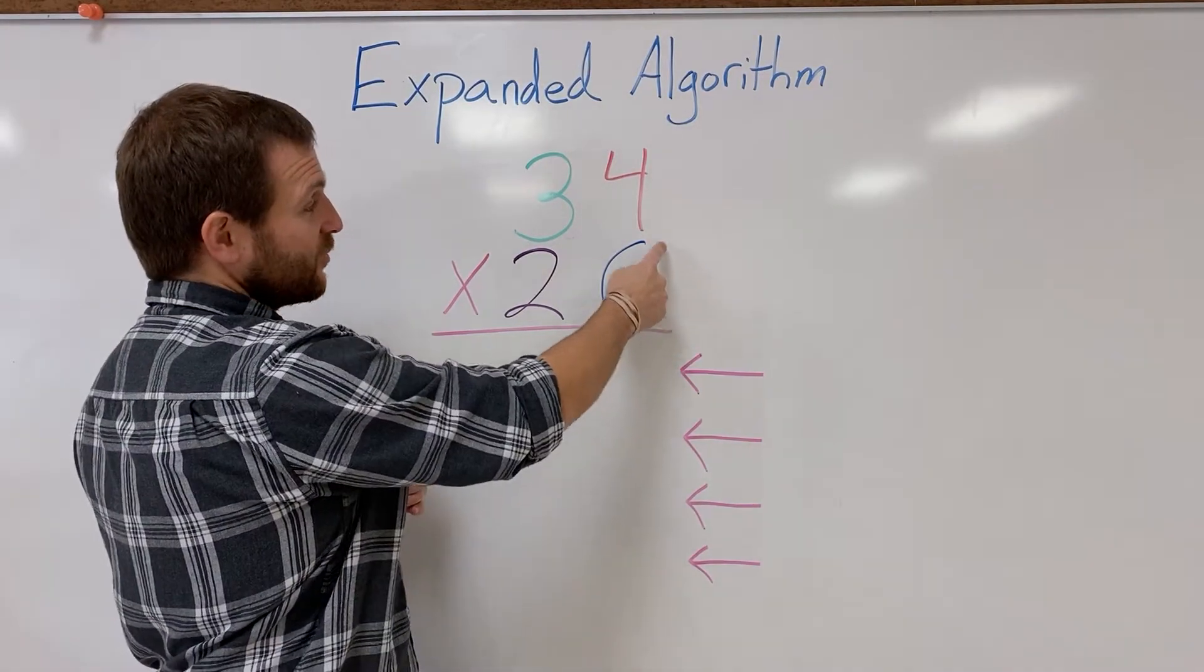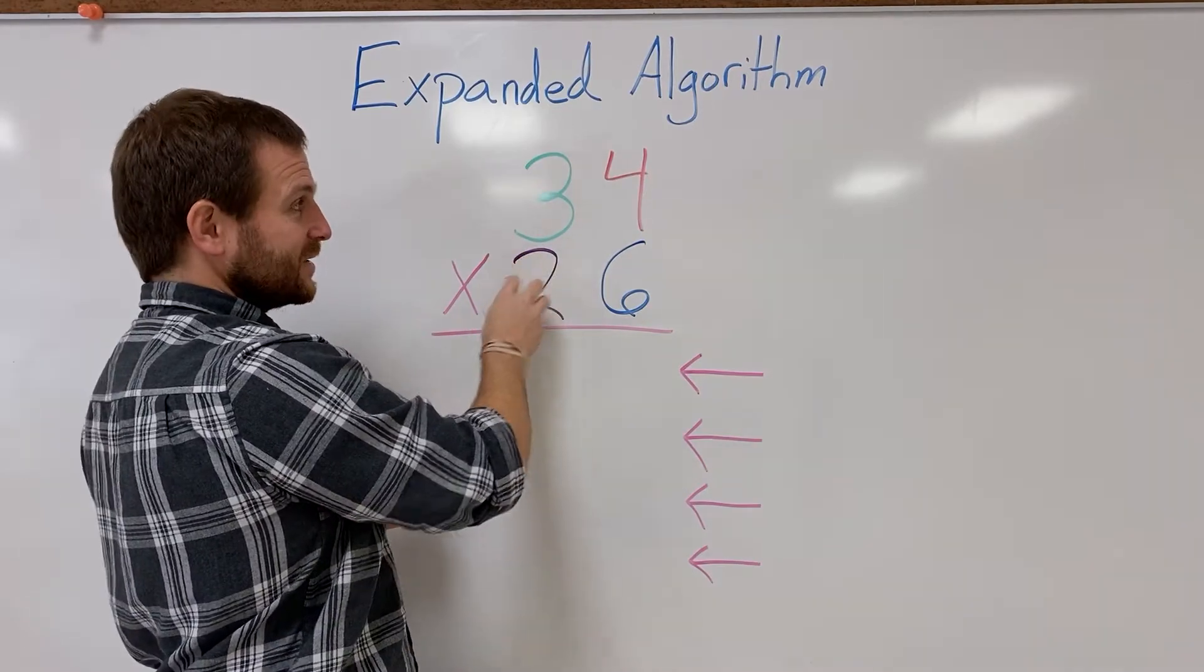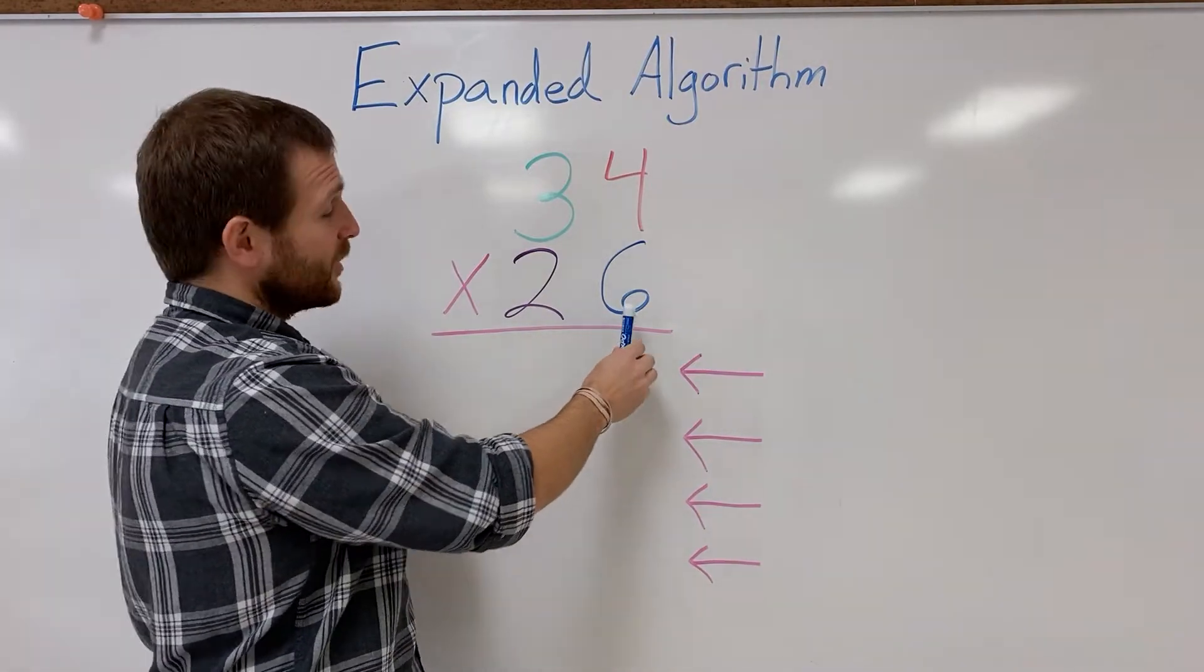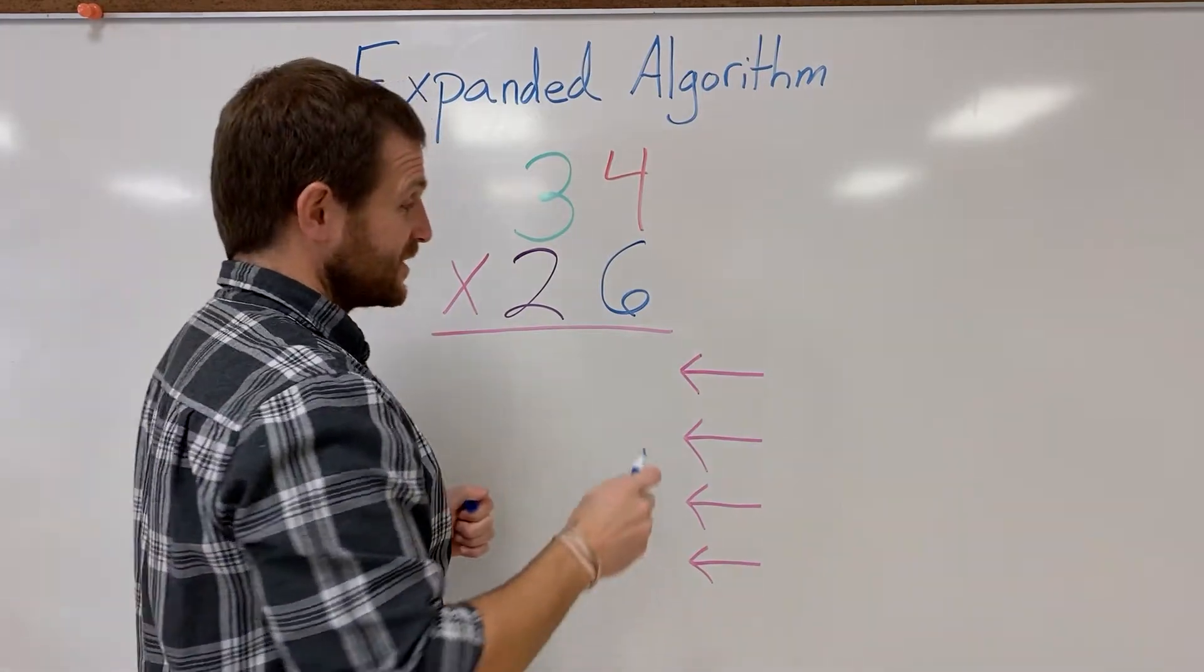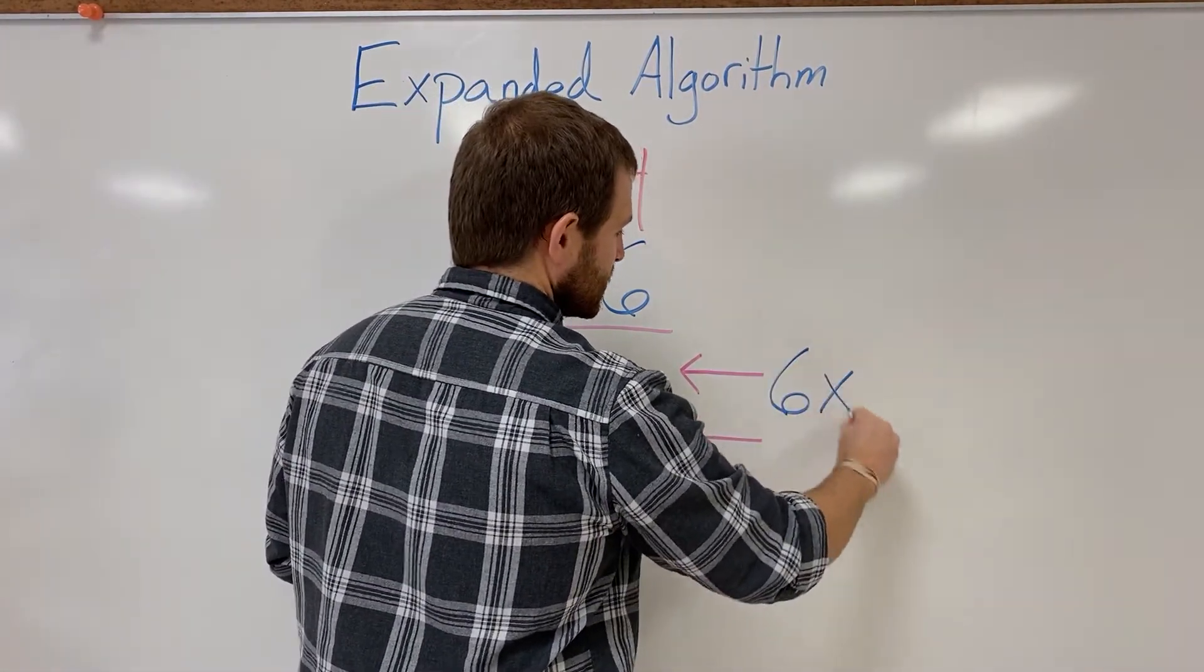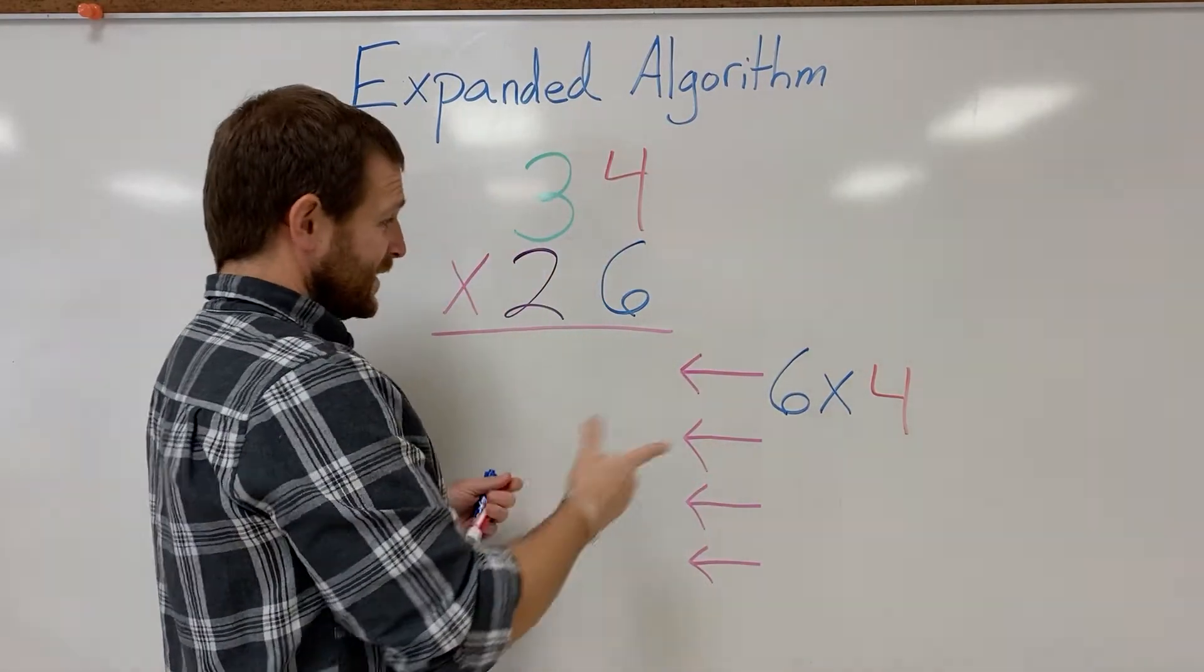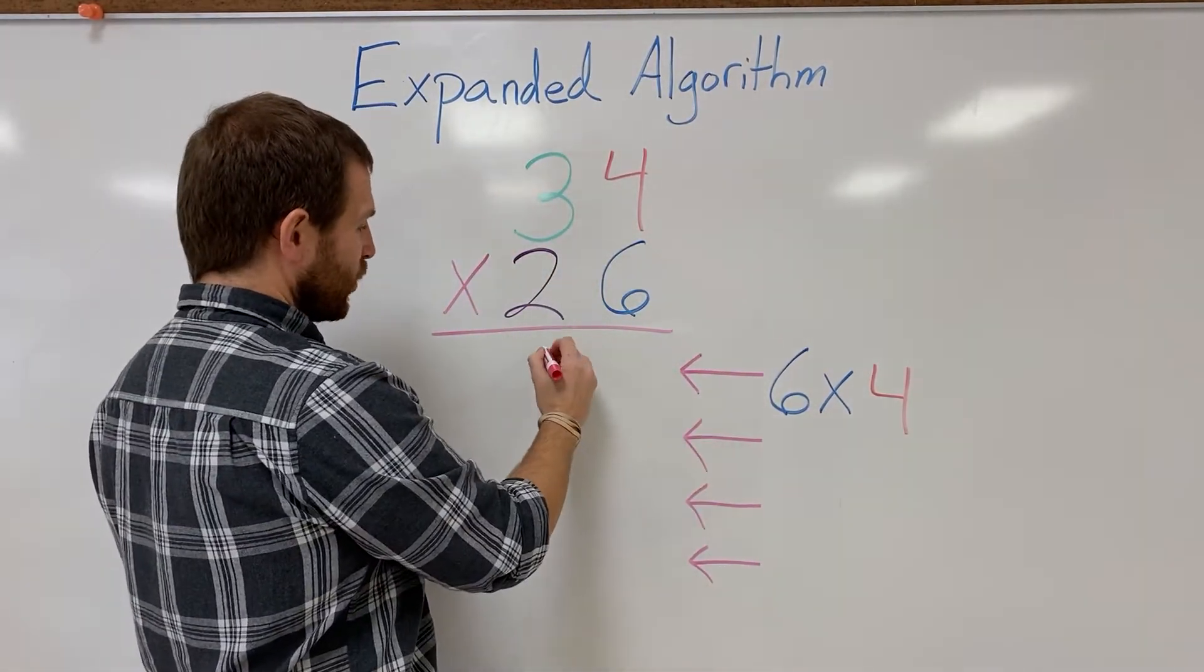So what I'm gonna need to do first is do 6 times all of 34, and then do 20 times all of 34. So let's start doing that now. So the first problem I'm gonna start with is 6 times 4, my single digits times my single digits. 6 times 4 is gonna get me 24.